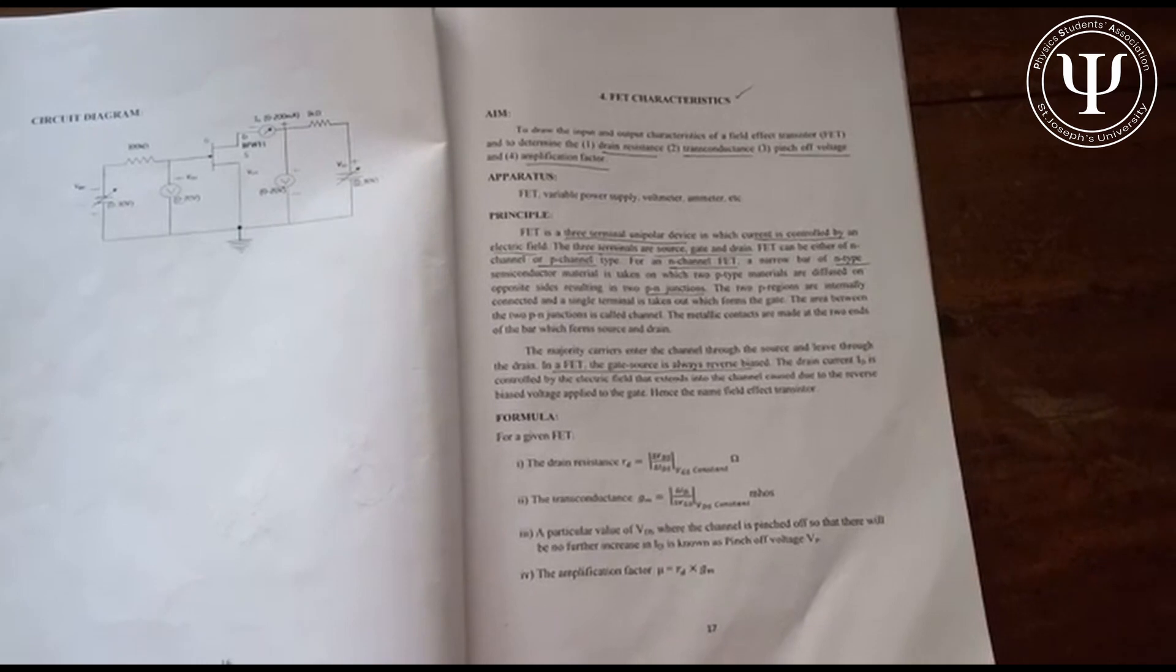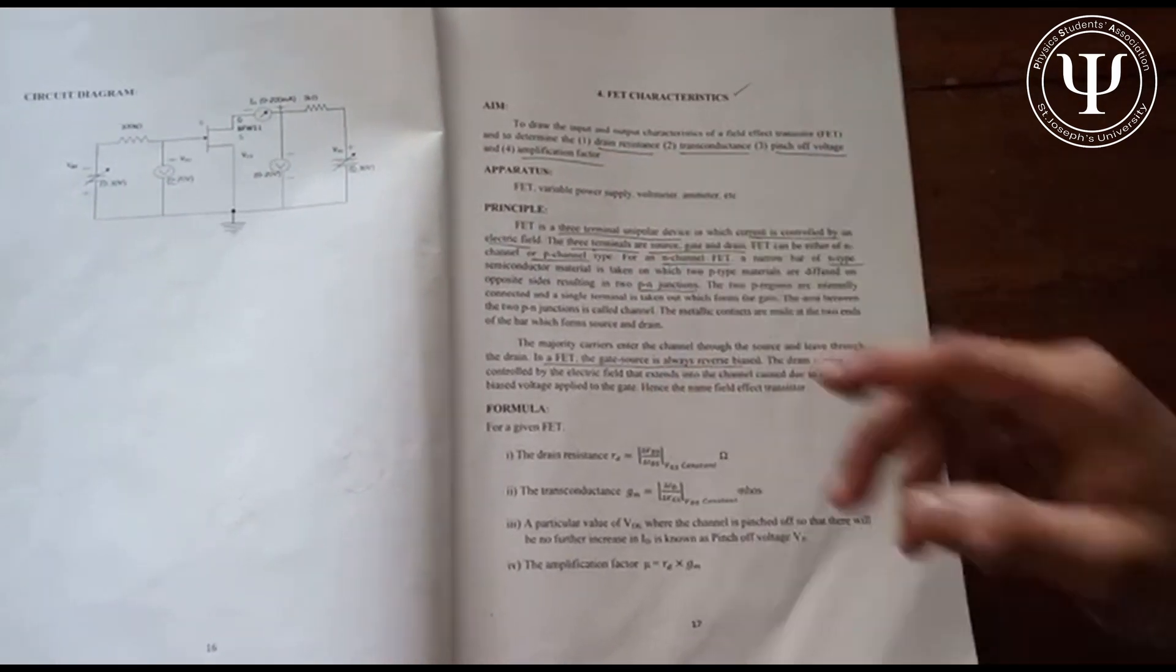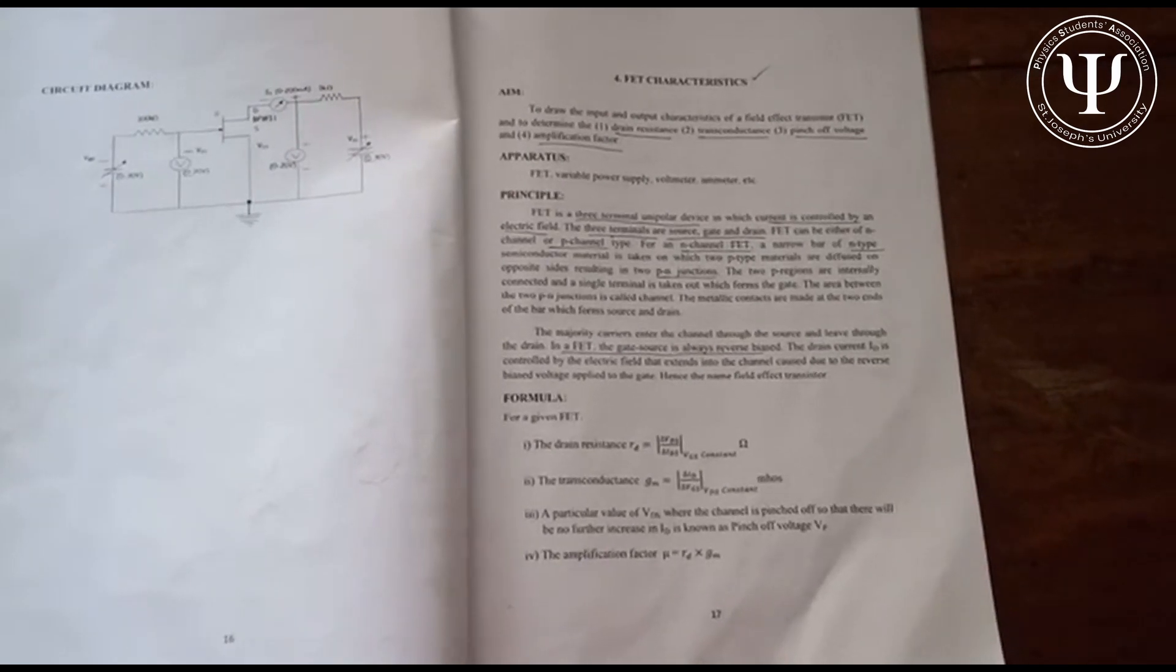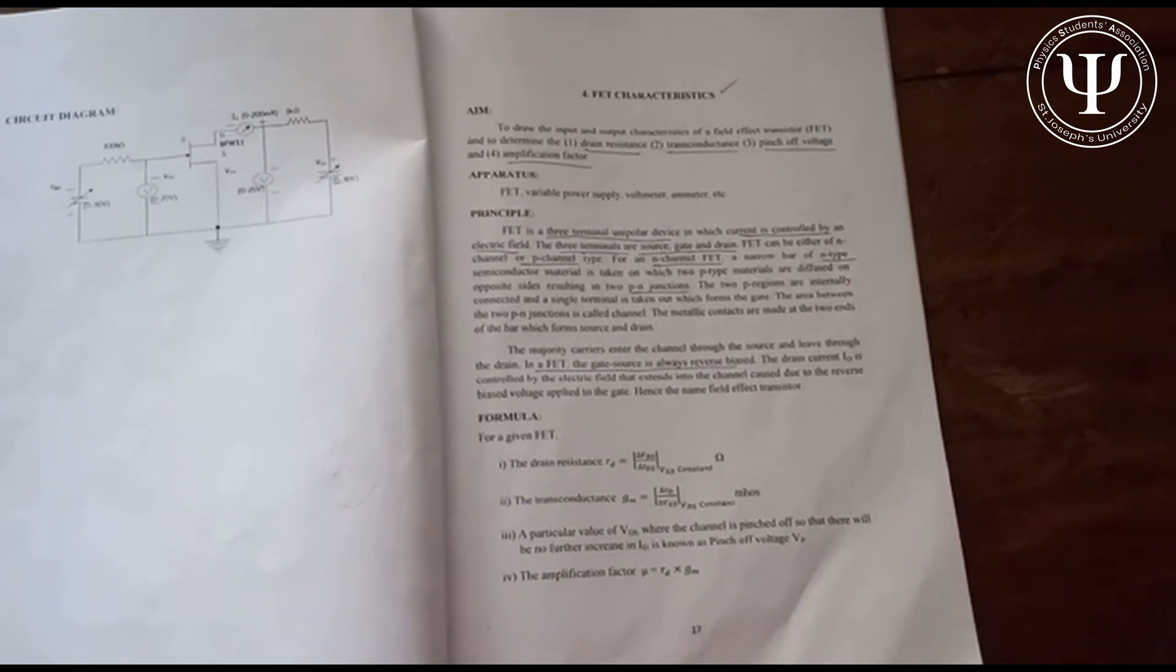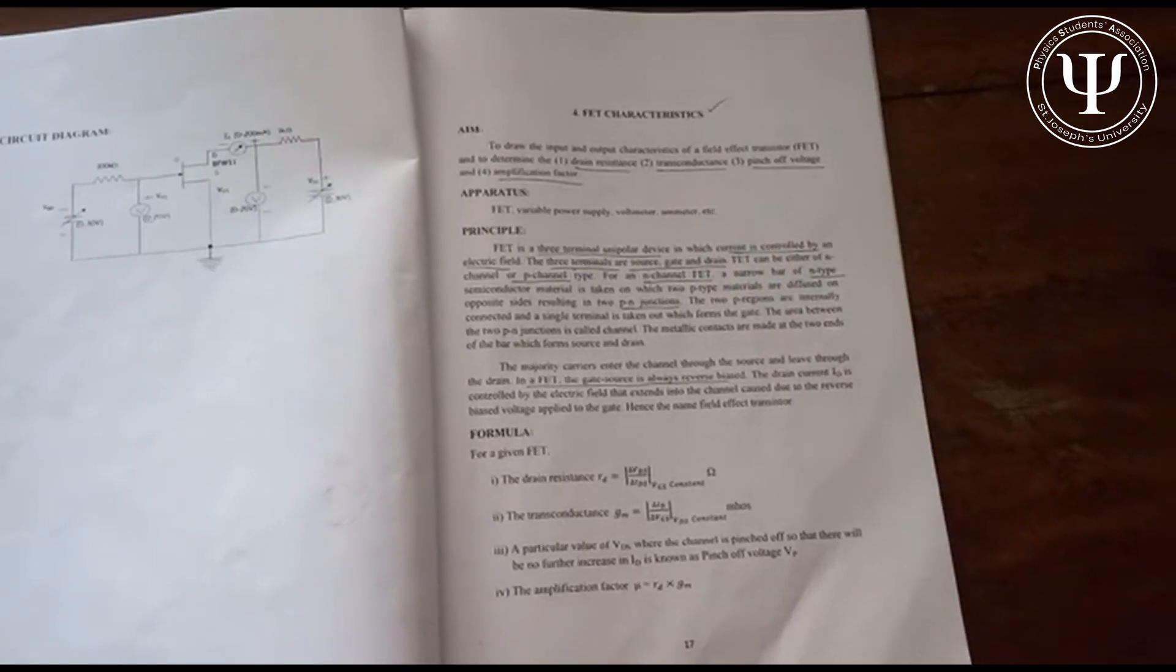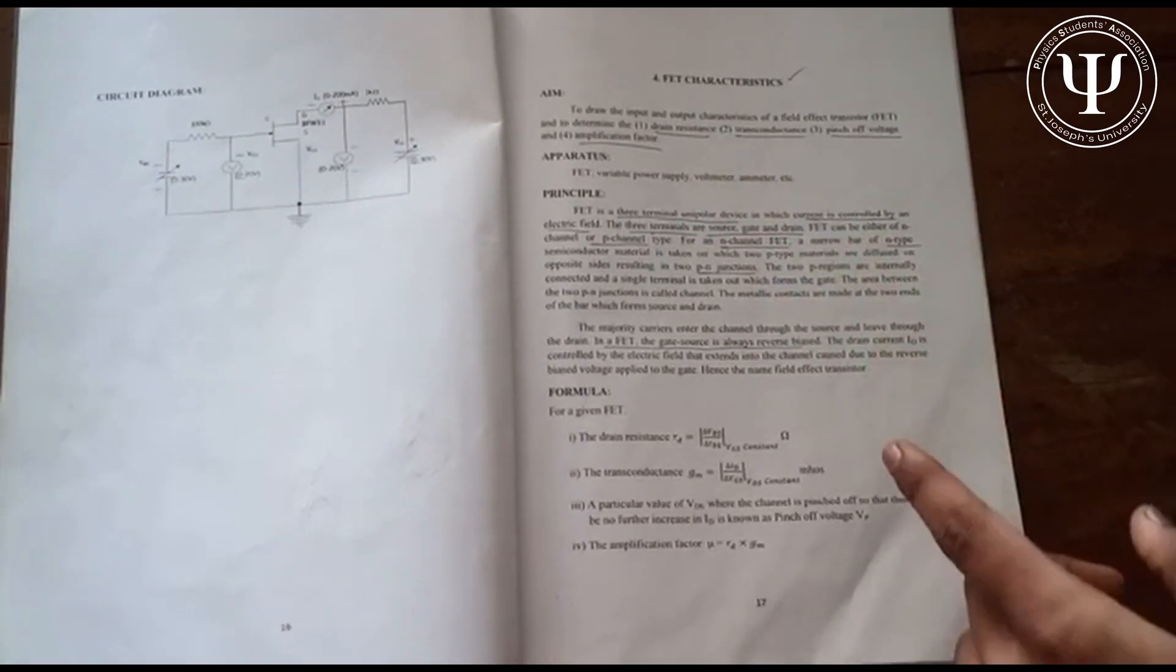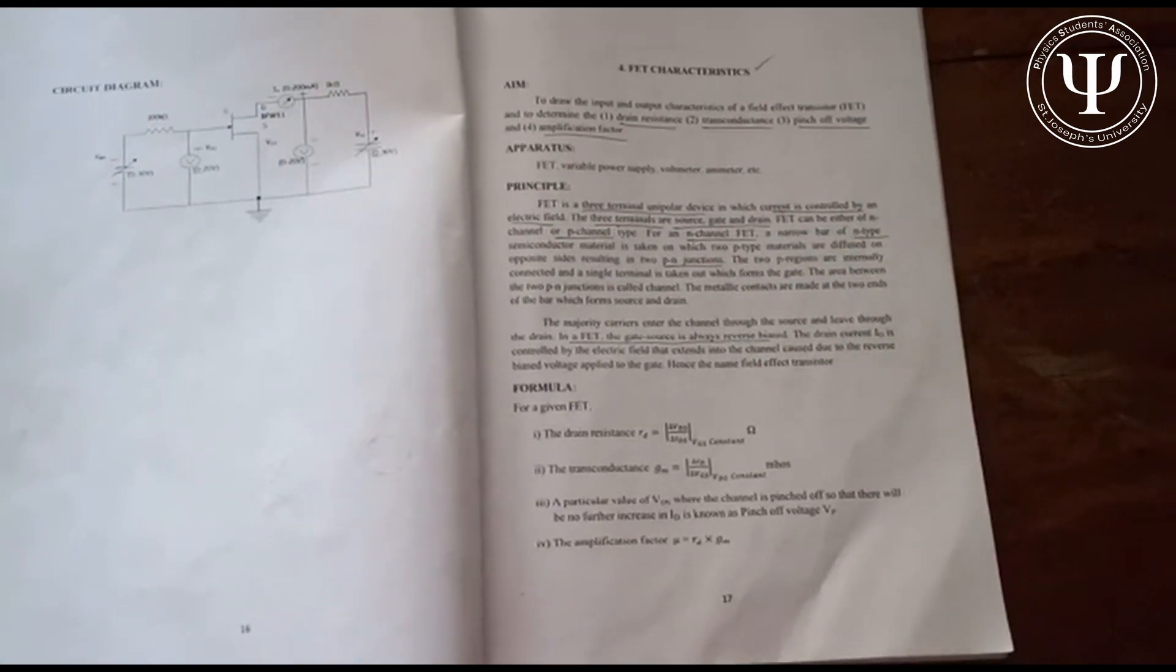However, it's not just plotting these graphs. What we are finding out is the drain resistance, which is obtained from the input graph, and the transconductance, which can be obtained from the output characteristics graph. Apart from this, there are two other things we have to calculate: the pinch-off voltage and the amplification factor, both of which I'll get to later.